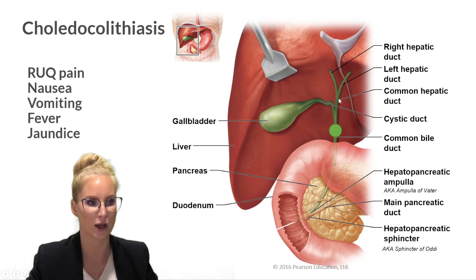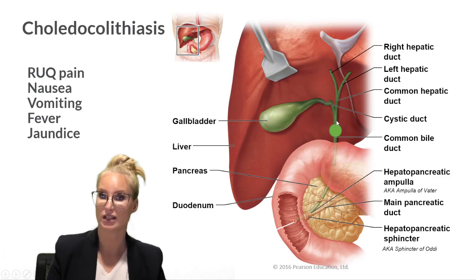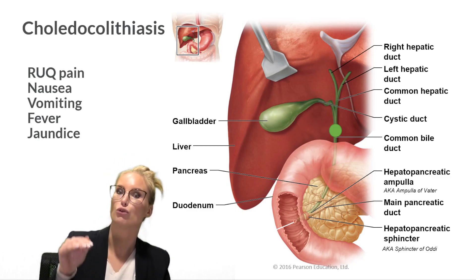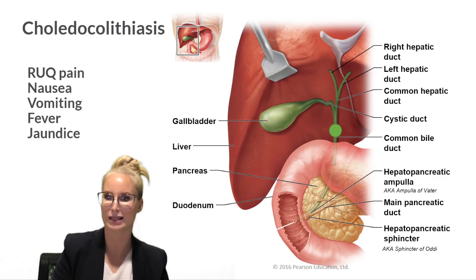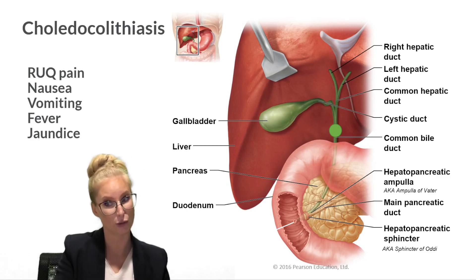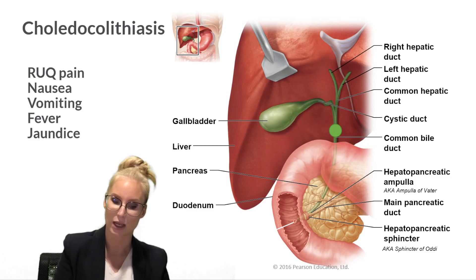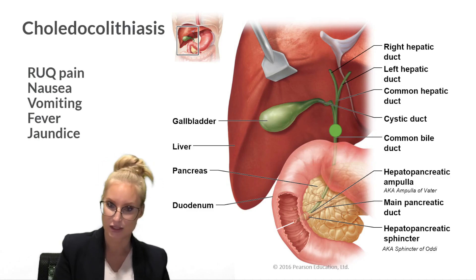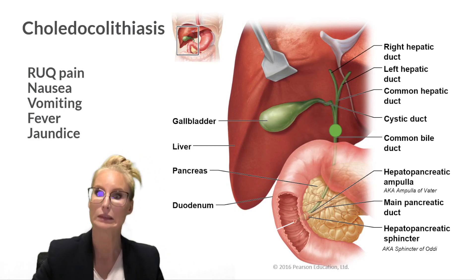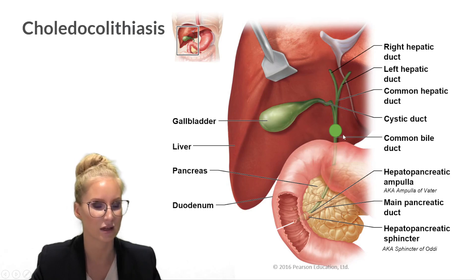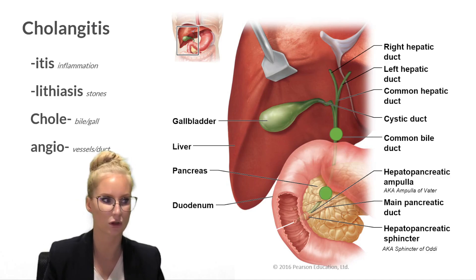With the stone in the common bile duct, you get the same gallbladder symptoms plus new symptoms related to the liver — specifically, obstructed outflow of bile from the liver. Since bilirubin is a component of bile, you'll see elevated bilirubin in the blood, as it's no longer being excreted into the duodenum but spilling into the bloodstream. That orangey-brown bilirubin turns the skin and sclera yellow — jaundice. The kidneys filter out the bilirubin, causing dark-coloured urine. Liver enzymes will also be raised. ERCP is the preferred method to diagnose and treat it.